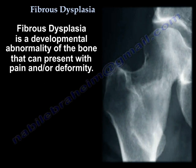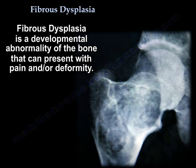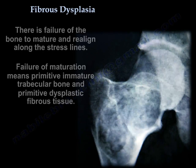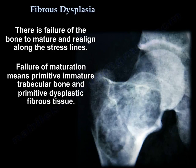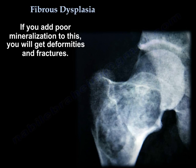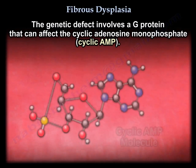Fibrous dysplasia is a developmental abnormality of the bone that can present with pain and/or deformity. There is failure of the bone to mature and realign along the stress lines. Failure of maturation means primitive immature trabecular bone and primitive dysplastic fibrous tissue. With poor mineralization added to this, you will get deformities and fractures.